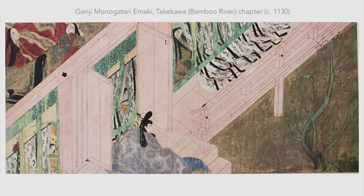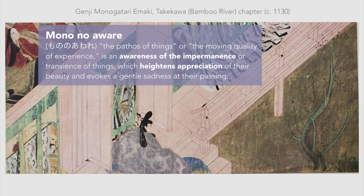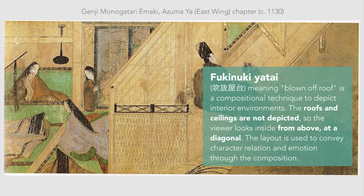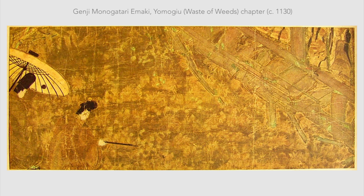A major theme of Genji Monogatari was the concept of Mono no Aware, translated as the pathos of things or the moving quality of experience. It is an awareness of the impermanence or the transience of things which heightens the appreciation of their beauty, and evokes a gentle sadness at their passing. The illustrations use pictorial conventions to help illustrate these moments of high emotional intensity. The fukinuki yatai, or blown-off roof and odd angle of perspective, not only seamlessly depicts indoor and outdoor activities, but also provides a better view of the space, much like a rake or inclined stage. The presence or absence of space in which the figures could move also contributes insight into their feelings. Colors and patterns heighten the mood of the scene, and all elements come together to create a strong impression of Mono no Aware.